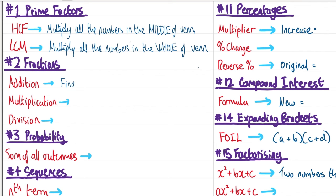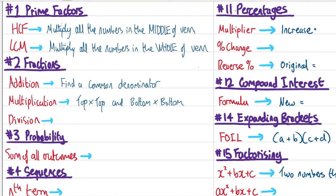Number two: fractions. To add fractions we must find a common denominator. When we multiply fractions, we just need to remember top times top and bottom times bottom. When we divide fractions, we use KFC — keep the first fraction the same, flip the second fraction over, and change the sign from division to multiplication.